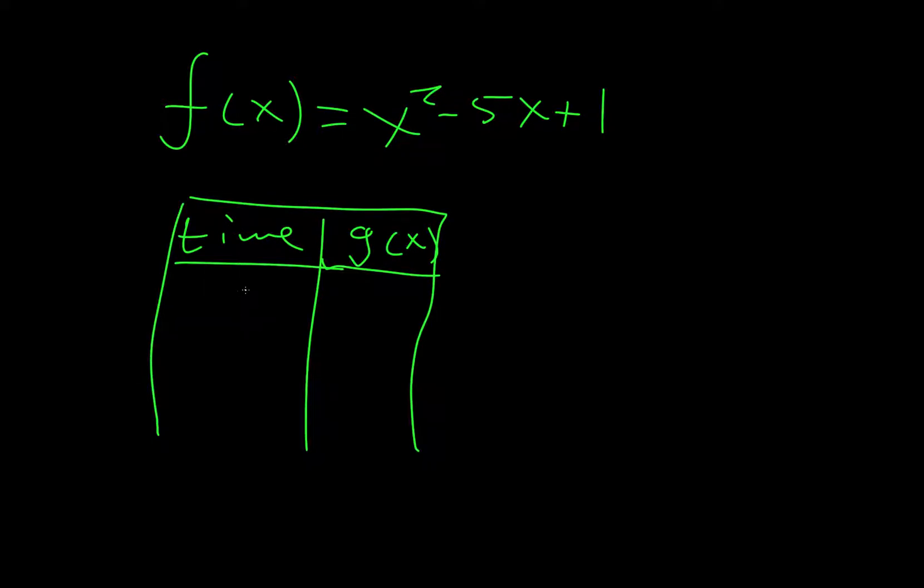And we have negative 1, 0, 1, 2, 3, 4, then we'll have 7, 1, negative 3, negative 5, negative 5, negative 3.